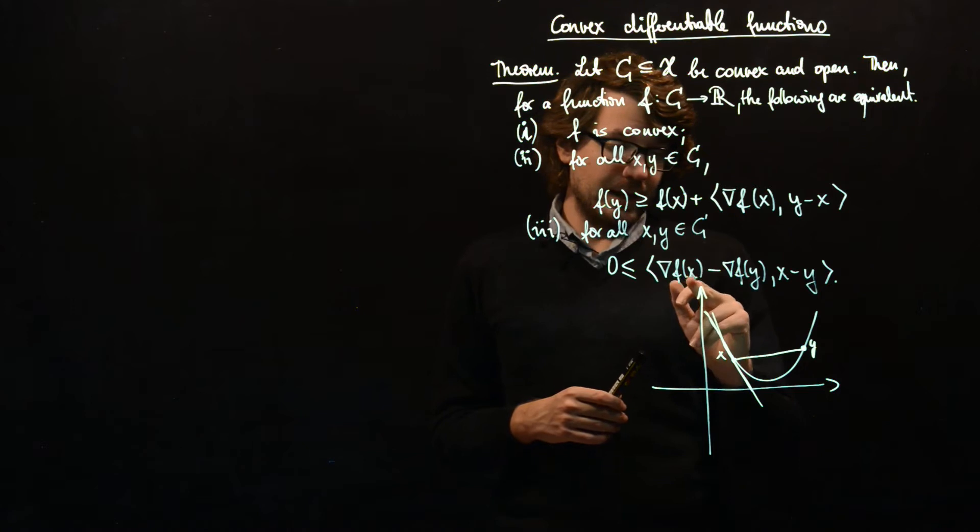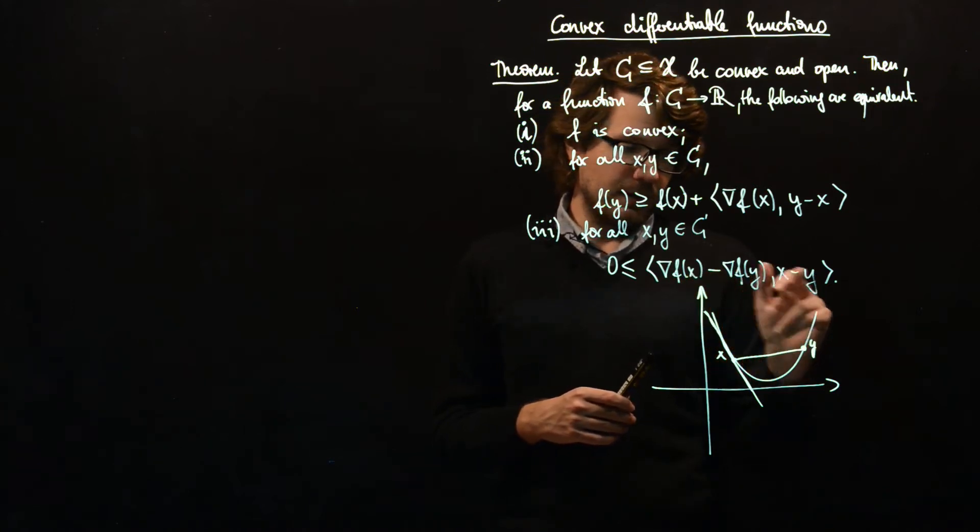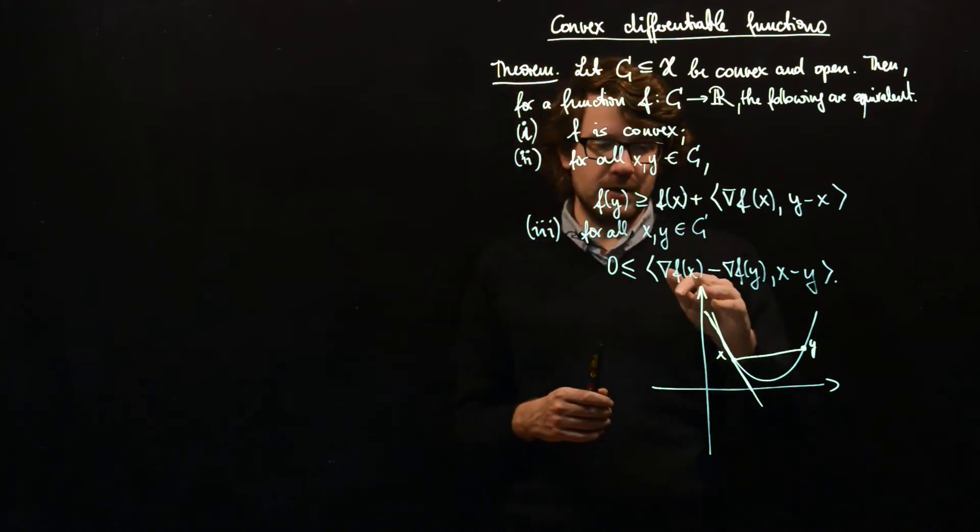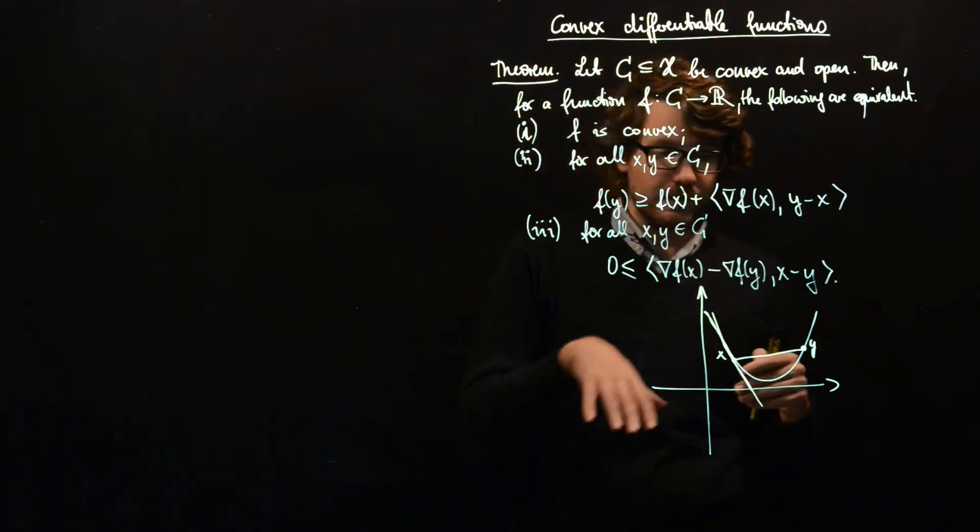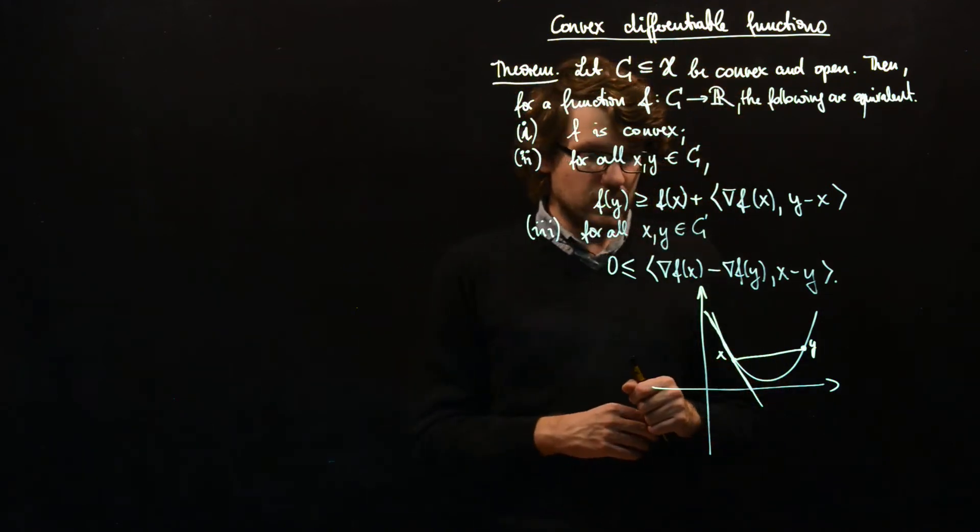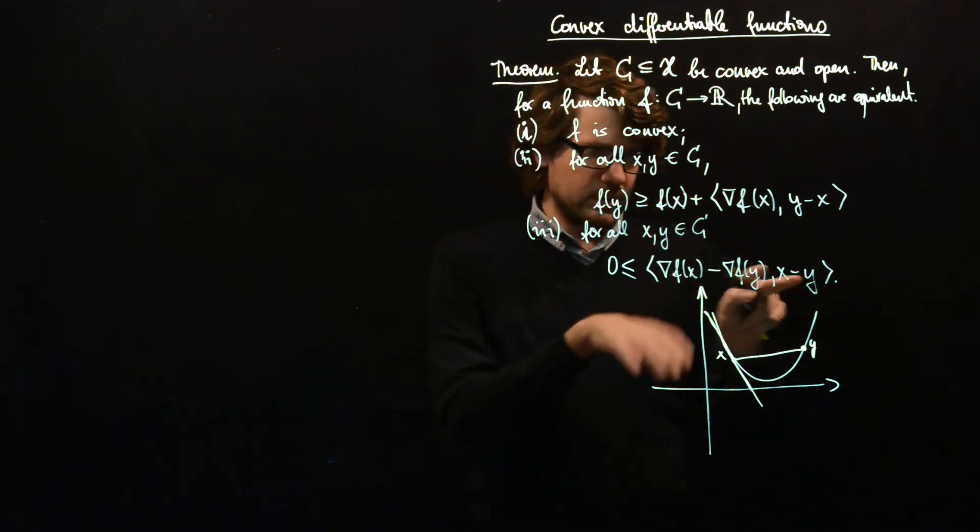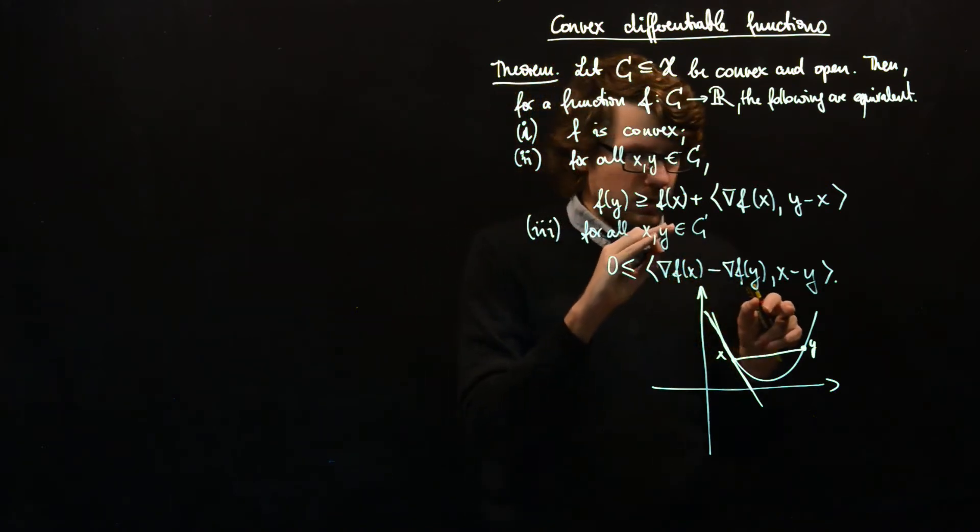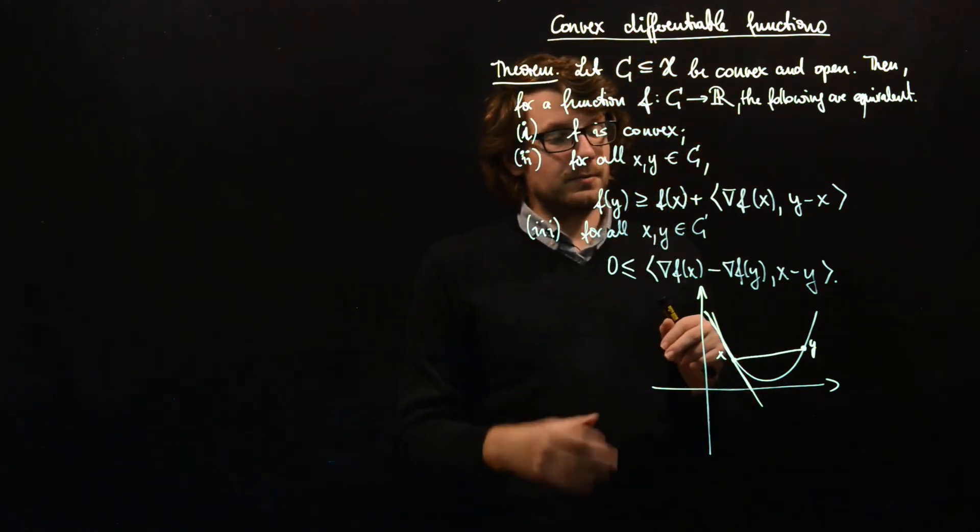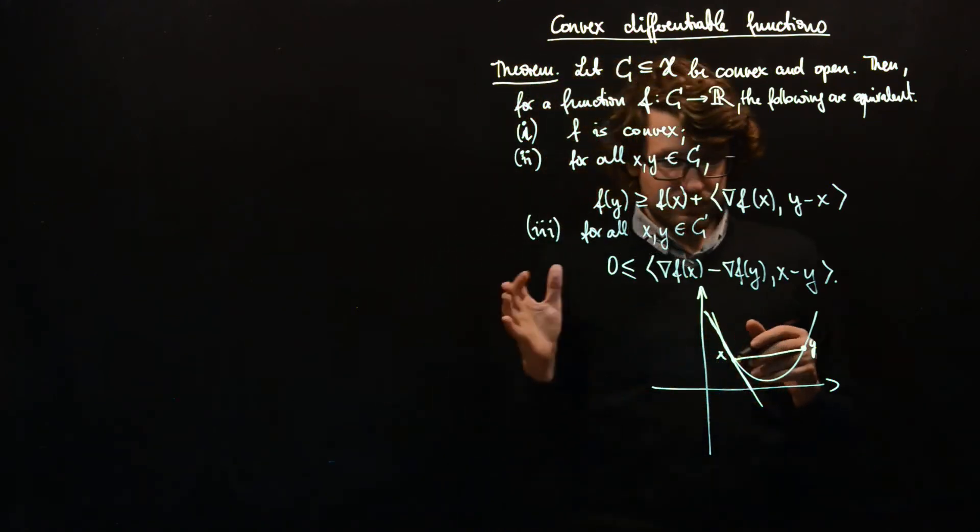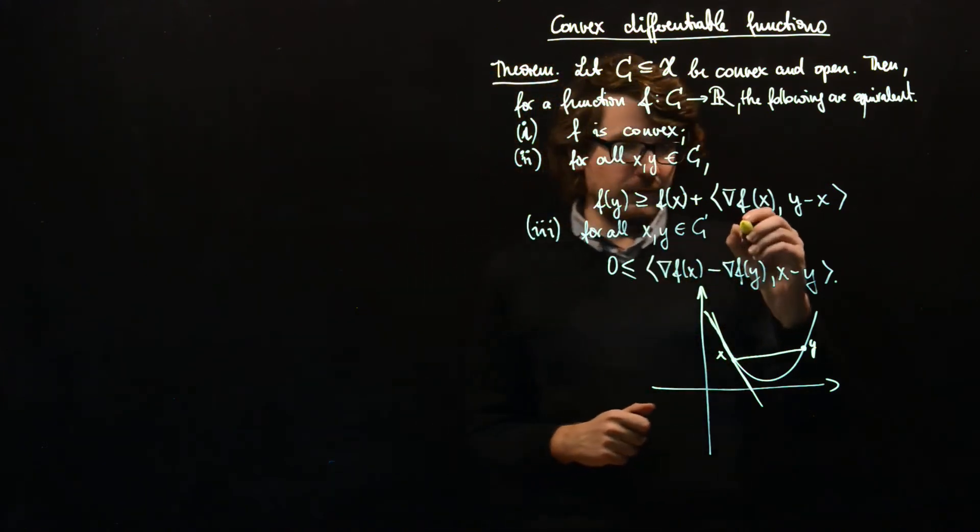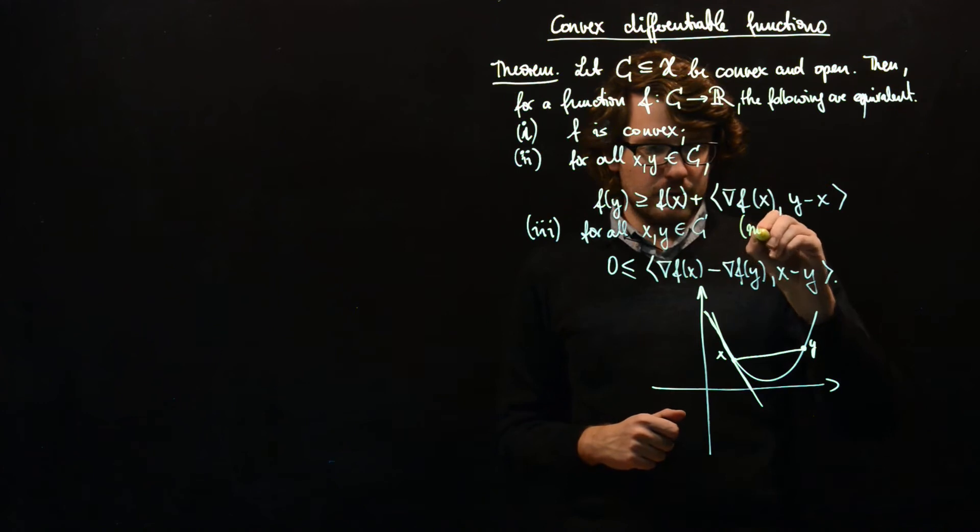This means whenever you have X greater than Y then the gradient at X should also be greater than the gradient at Y and vice versa. So in one dimension this corresponds to the non-decreasing property or non-strictly increasing property of the derivative. And therefore this is called monotonicity.